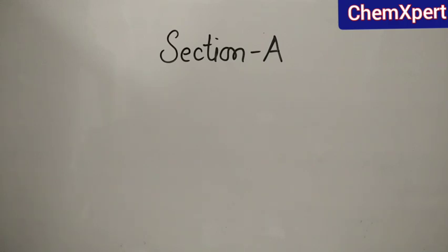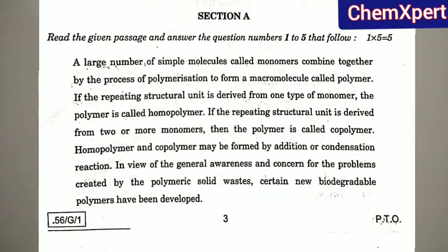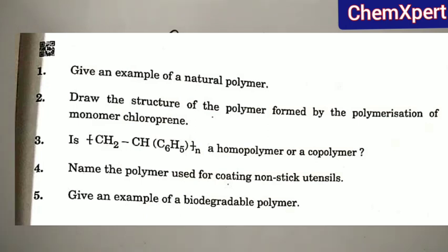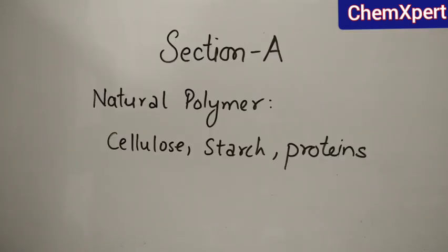In Section A, the first question is in passage form and this passage is from the polymer chapter. The first question asks: give an example of a natural polymer. Examples are cellulose, starch, or protein — any one example can be written for this question.